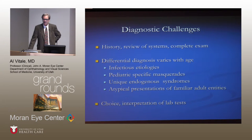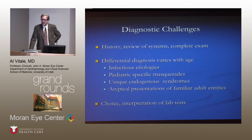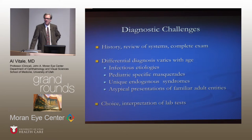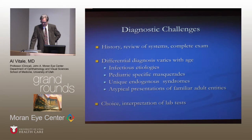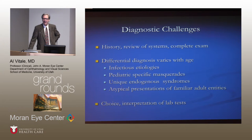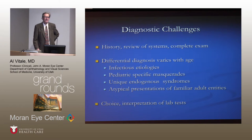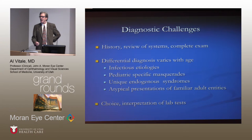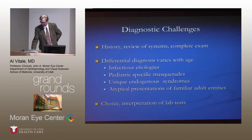The differential diagnosis varies with age, with an over-representation of infectious etiologies, the presence of pediatric-specific masquerade syndromes such as juvenile xanthogranuloma, acute myelogenous leukemia, or retinoblastoma, and unique endogenous syndromes like Kawasaki's disease or juvenile idiopathic arthritis, and atypical presentations of otherwise familiar diseases such as sarcoidosis in children, which affects the laboratories one might order in working these kids up.